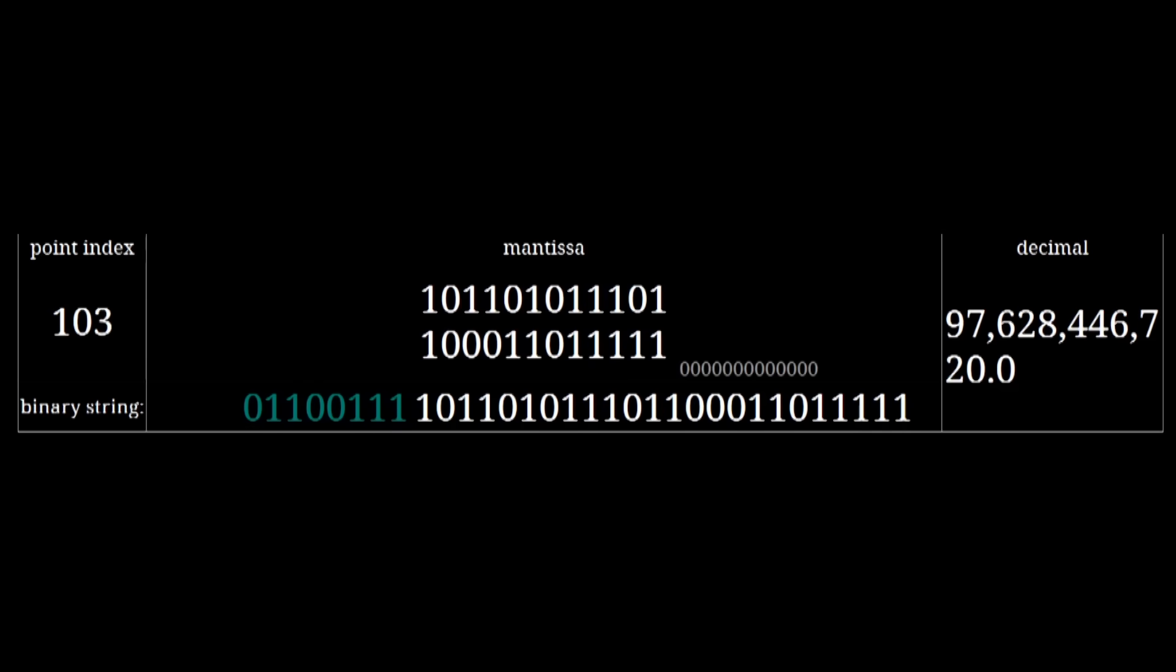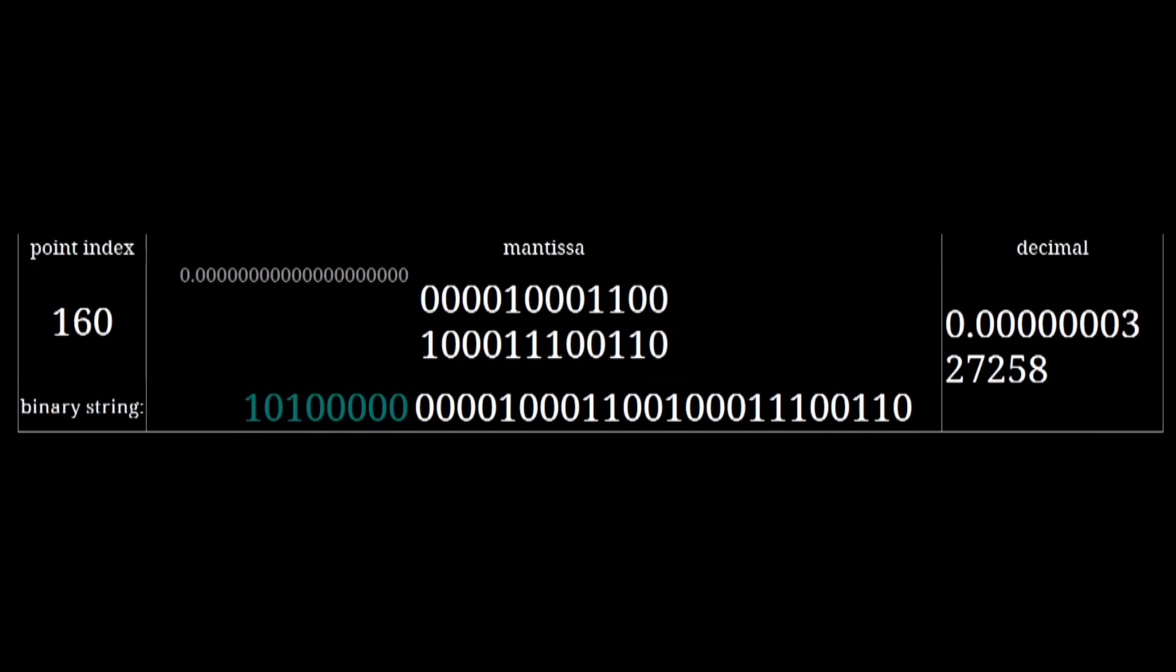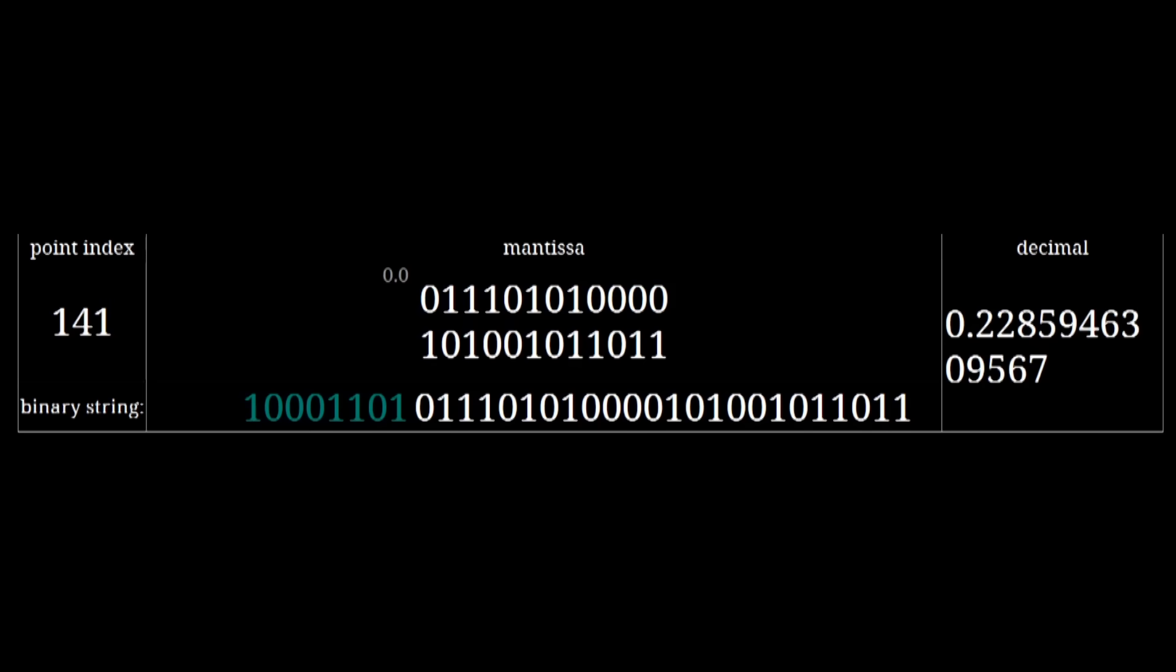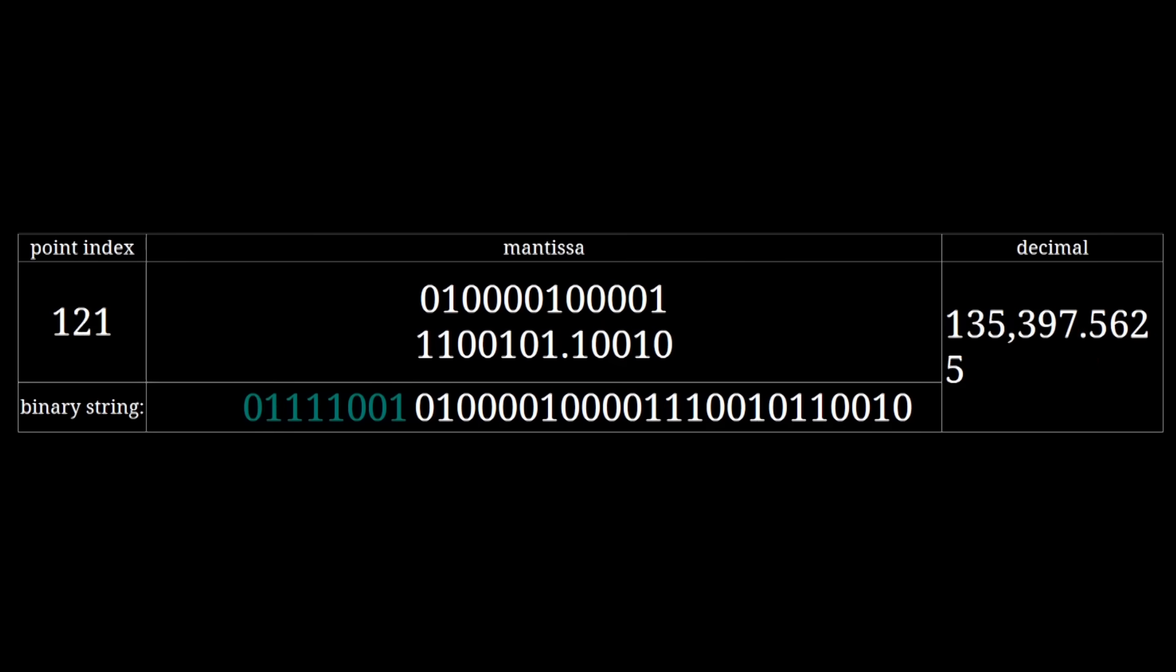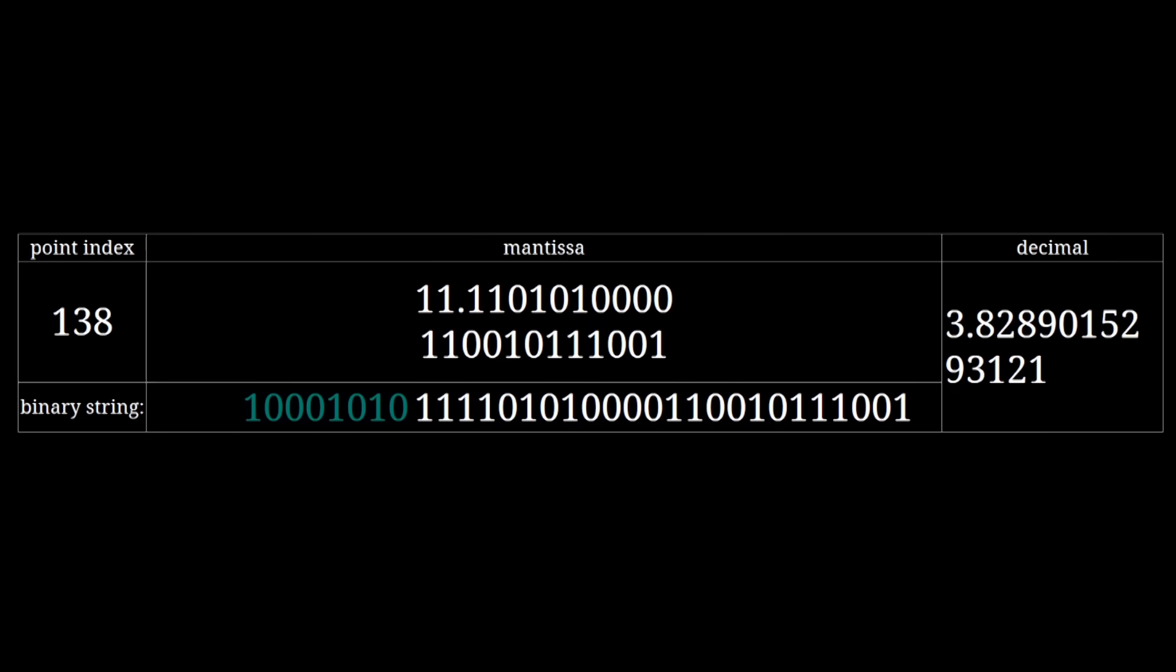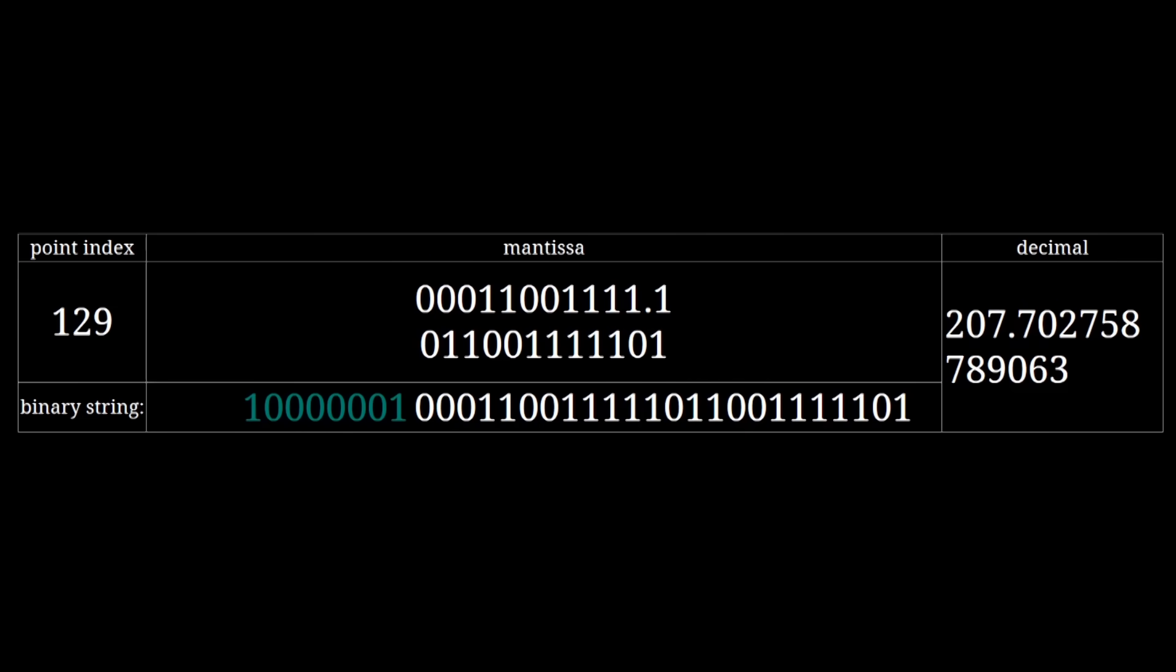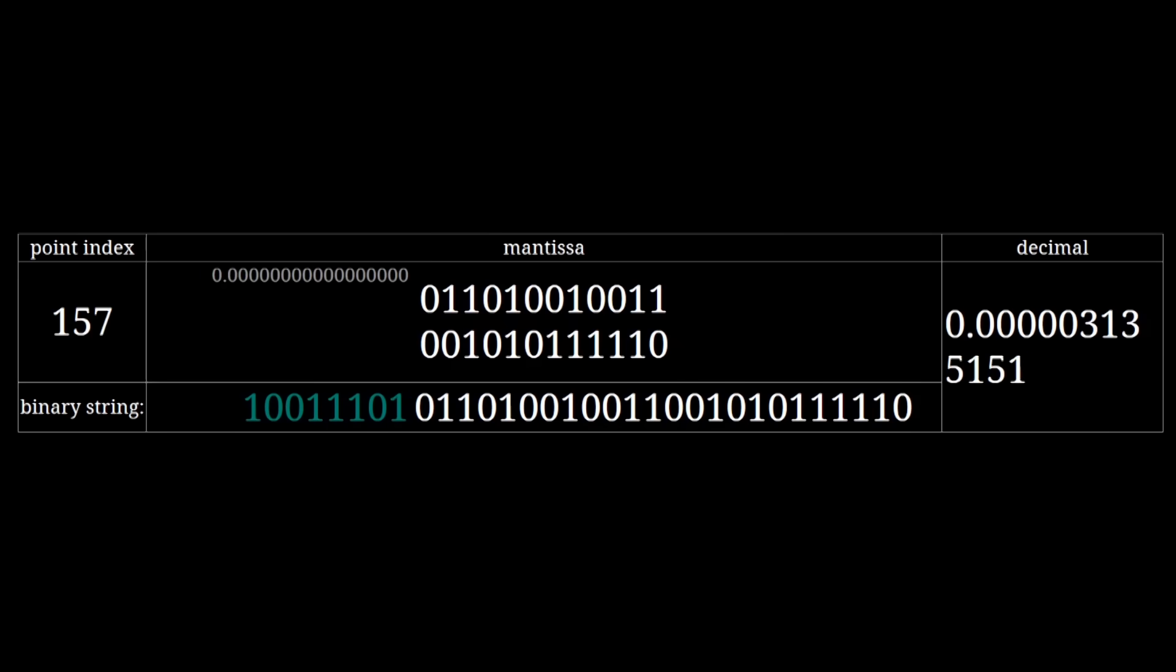You've probably noticed the tradeoff here. The more bits you use for the position of the point, the wider the range of numbers you can represent ends up being. But at the same time, you lose a lot of precision. If you want to get really wild, you could imagine using some extra bits to tell the computer exactly where the point index ends and where the mantissa begins in some sort of floating floating point system. But let's not get carried away here. This rather simple implementation of floating point still has a couple of problems, which we'll need to solve before we have something with the same capabilities as the standard floating point format.